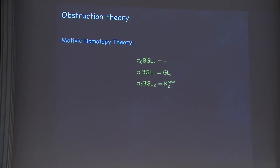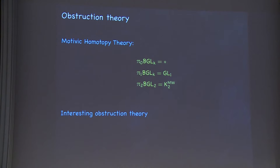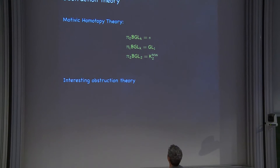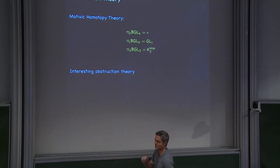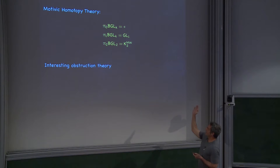On the other hand, motivic homotopy theory does penetrate. The fundamental group of BGL_k in motivic homotopy theory is GL₁, and π₂ is the second Milnor-Witt K-theory — unramified Milnor-Witt K-theory. There's a little bit of information known about the higher homotopy sheaves, and it does lead to an interesting obstruction theory. I probably need k to be at least three or something for that.